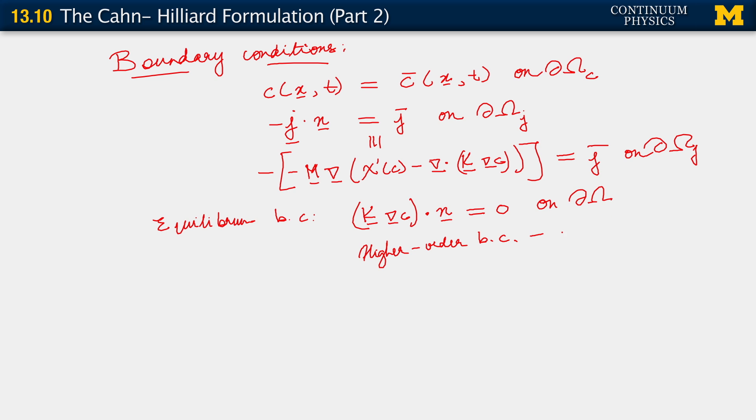The variational treatment tells us that this, too, is a Dirichlet type boundary condition. It's a Dirichlet type boundary condition not on the concentration itself, but it is on grad c. It's really properly on grad c, k grad c dot n. It's a Dirichlet or essential type of boundary condition.